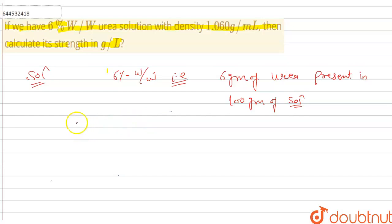So now we have given density equals 1.060, and this equals mass upon volume. That is, mass 100 gram of solution and volume is V.